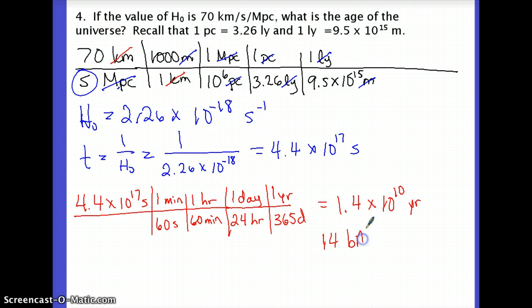That's 14 billion years, which is a very typical number for the age of the universe - a very standard kind of number. From this we know that the universe must be billions of years old.